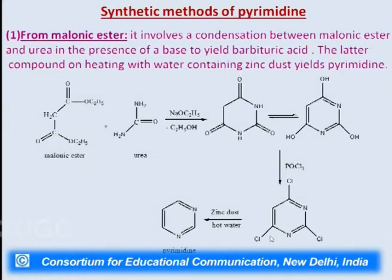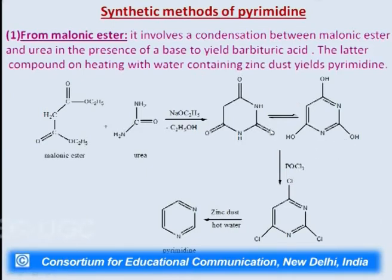One synthetic method of pyrimidine is from malonic ester. Pyrimidine can be prepared from the condensation between malonic ester and urea in the presence of a base — sodium ethoxide — to yield barbituric acid, which is 2,4,6-trihydroxypyrimidine, tautomeric to its keto structure. This barbituric acid further on heating with water containing zinc dust yields pyrimidine. First, the hydroxy groups are substituted by chloro groups by reaction with phosphoryl chloride, then this undergoes reaction with boiling water to give pyrimidine.